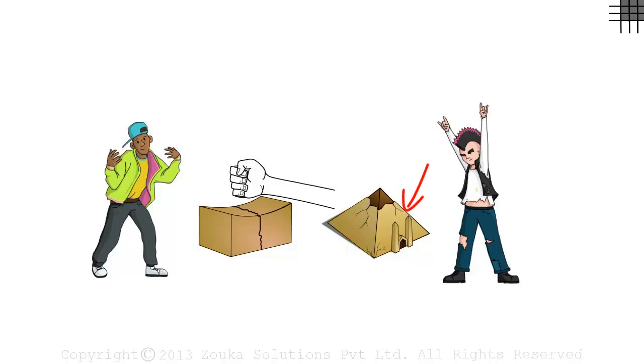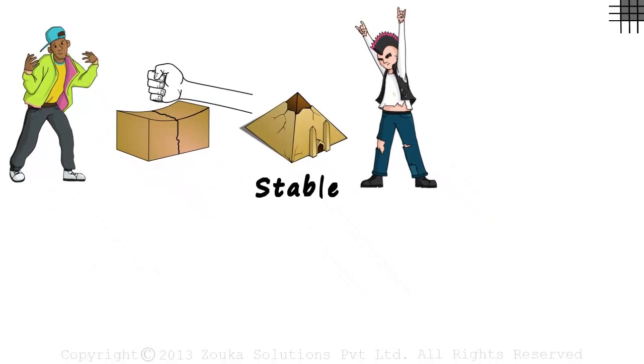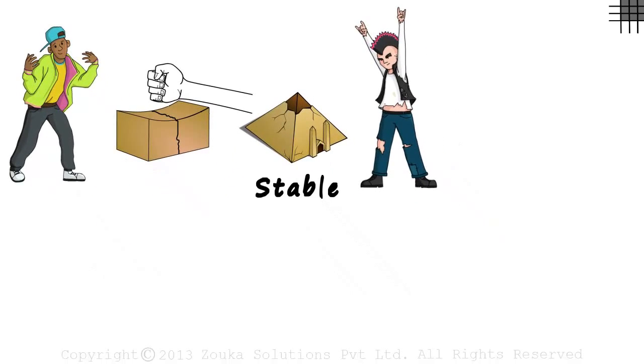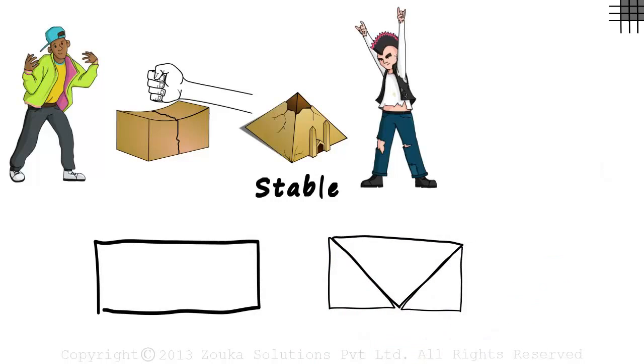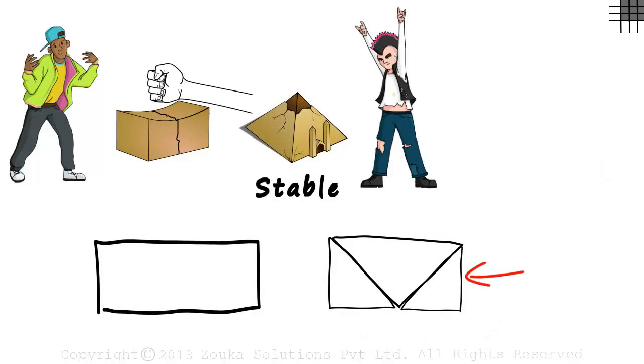And that is why a triangular shape is considered to be extremely stable in the field of architecture. So what do we do if we want a stable and more solid rectangular shape? Maybe we can use three triangles like this and make one rectangle. This figure will be more stable as compared to this one.